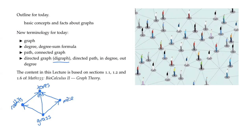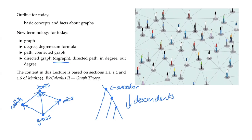Graphs are also used extensively to represent phylogenies — thinking about genetic changes in a population over time. You can think about some sort of ancestral state up here, being an ancestor, and then we can think about its descendants. These are used very extensively to understand relationships, whether genetic relationships, pedigrees, or to represent morphological variation. There are lots of different ways in which we can use graphs, sometimes called networks, in the life sciences.